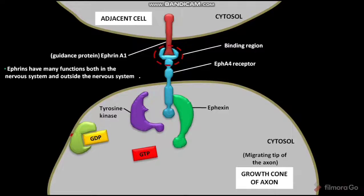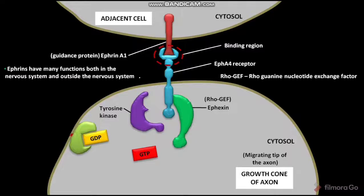Afaxin is a type of Rho-GEF, which stands for Rho-Guanine Nucleotide Exchange Factor. Due to the binding of Ephrin-A1 and the inactive EPH-A4 receptor, the inactive EPH-A4 receptor becomes phosphorylated on its tyrosine amino acid. Due to this phosphorylation, the inactive EPH-A4 receptor becomes active.